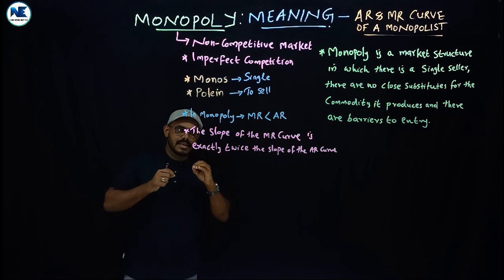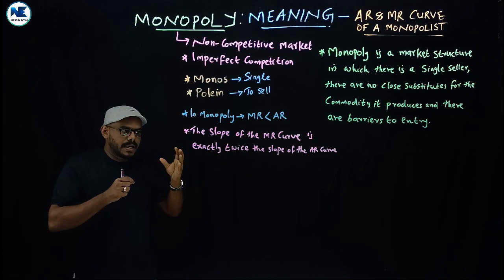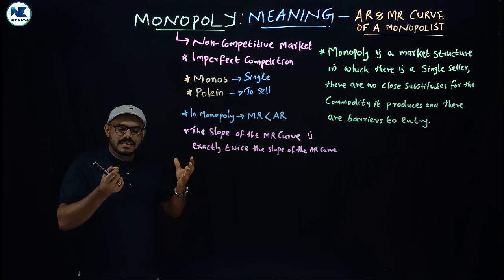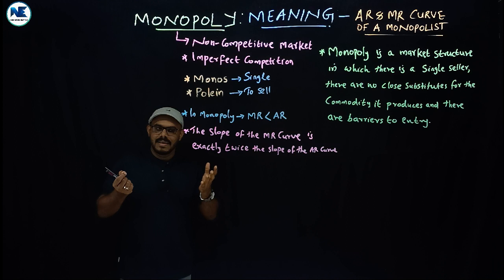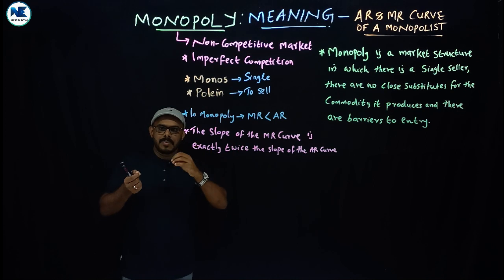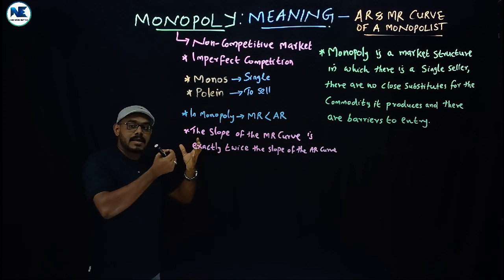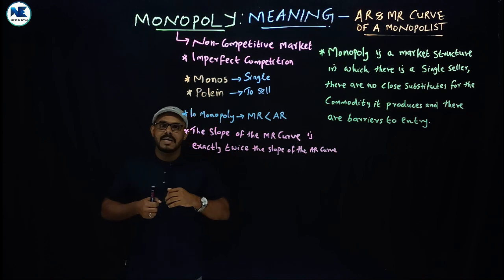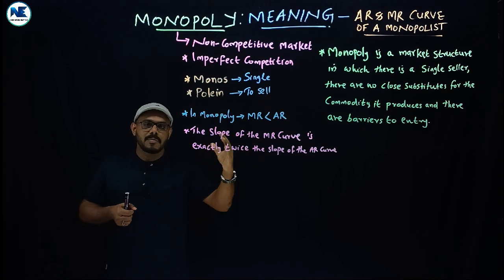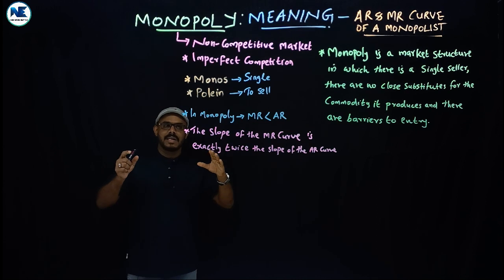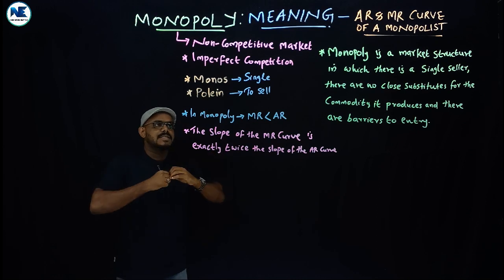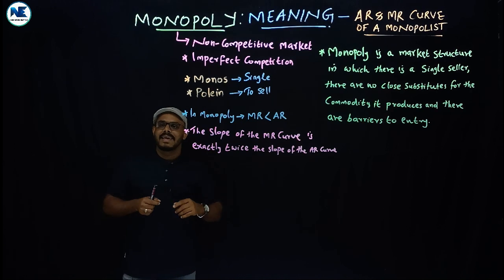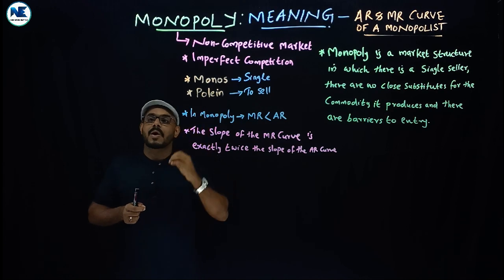Another interesting area includes the meaning and types of monopoly, and characteristics or features of monopoly. Then short-run equilibrium of a monopolist and long-run equilibrium of a monopolist, and the major differences between monopoly and perfect competition. In this part, we will consider meaning, implications, and also the AR and MR of a monopolist.